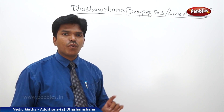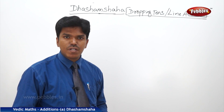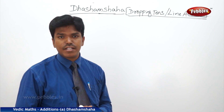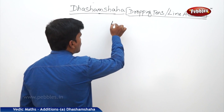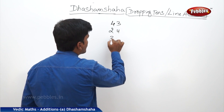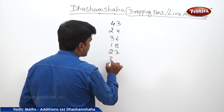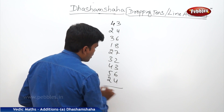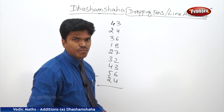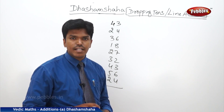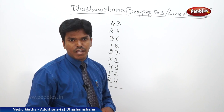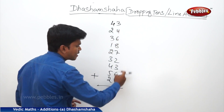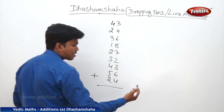Now, we have seen only one-line addition. If two or three digit numbers come in a line, then how do we handle it? Let us take one example: 43, 24, 36, 18, 27, 32, 43, 56, 24. I want to add these numbers using line addition — that is, Dashamsaha. We will start from the right side column.